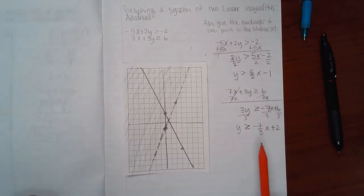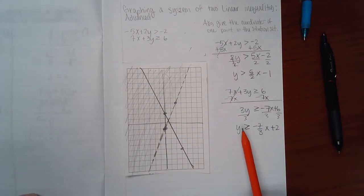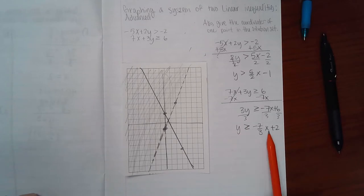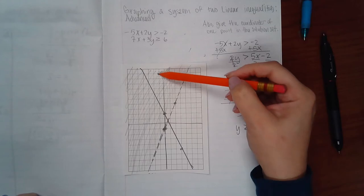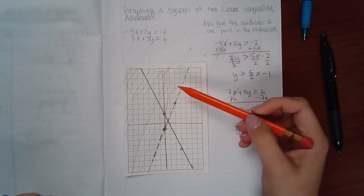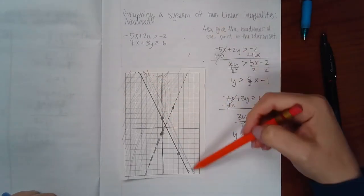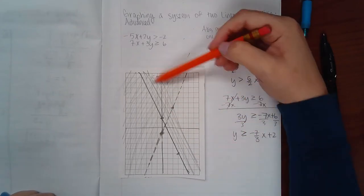For this line, we're going to take all the y values that are greater than the line. That would be these y values up here, which means I would have to shade this side of the solid line.